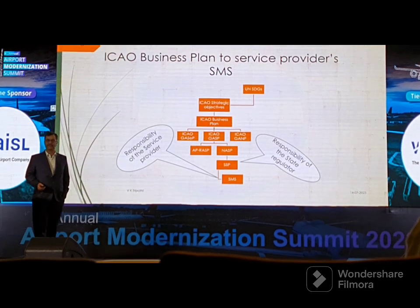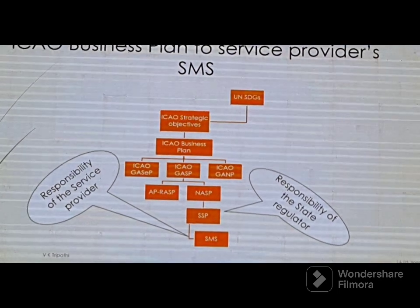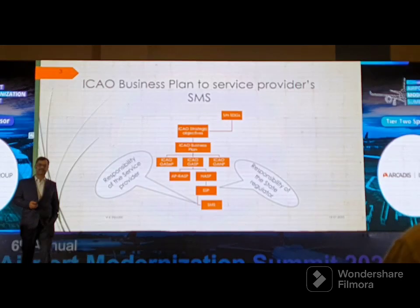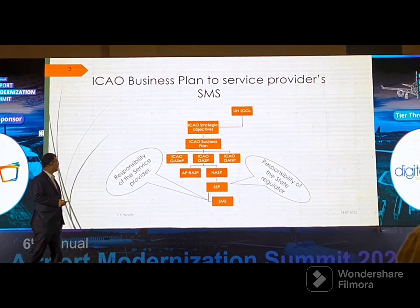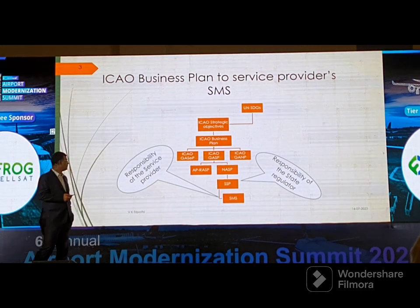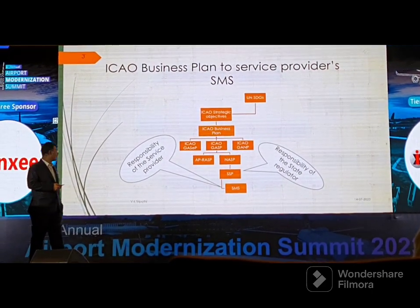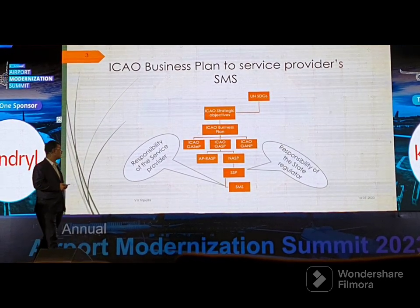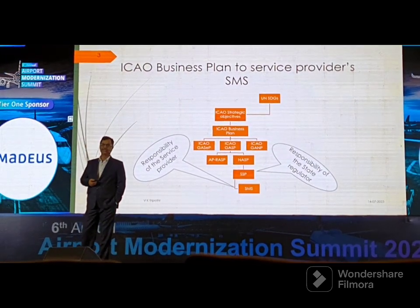This is the entire aviation network starting from ICAO — the International Civil Aviation Organization, a United Nations agency for civil aviation. From ICAO strategic objectives and business plan, you have the Global Aviation Security Plan, the Global Aviation Safety Plan (GASP), and the Global Aviation Navigation Plan. From GASP we come to our region, that is Asia Pacific.